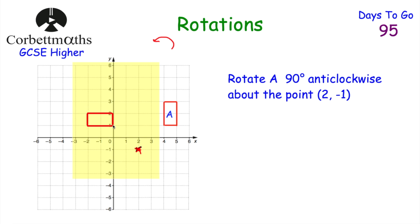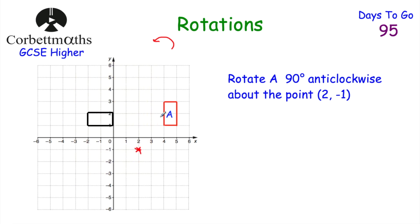We can see where the rectangle should move to. Then push down on the tracing paper to leave a light indentation on the page beneath, and draw that rectangle. And that's it — we've rotated A 90 degrees anti-clockwise about the point 2, negative 1.